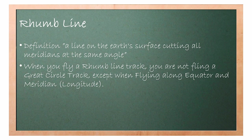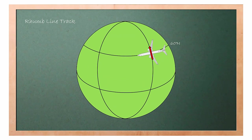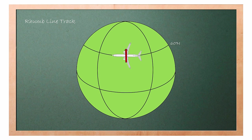Meridian is another name for longitude. To better understand the concept of rhumb line, here is an illustration. The green sphere represents the Earth, with an aircraft and a red arrow — the red arrow represents a compass that always points to true north. If the aircraft travels from east to west along 60 degrees north latitude, the relative angle between the red arrow and the nose of the aircraft does not change — in other words, the angle is constant.